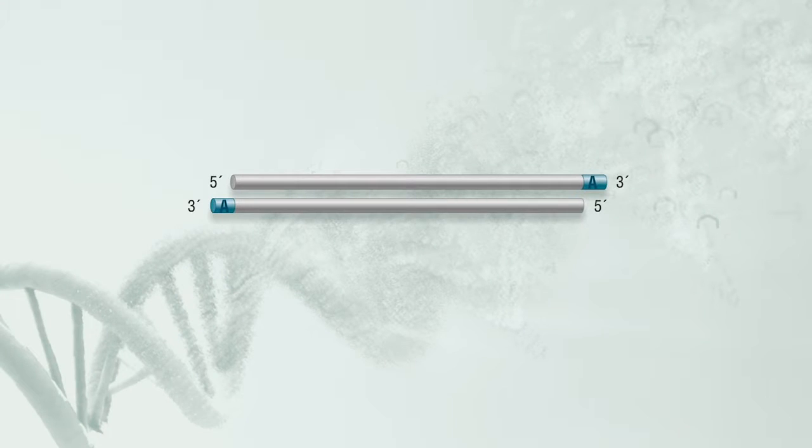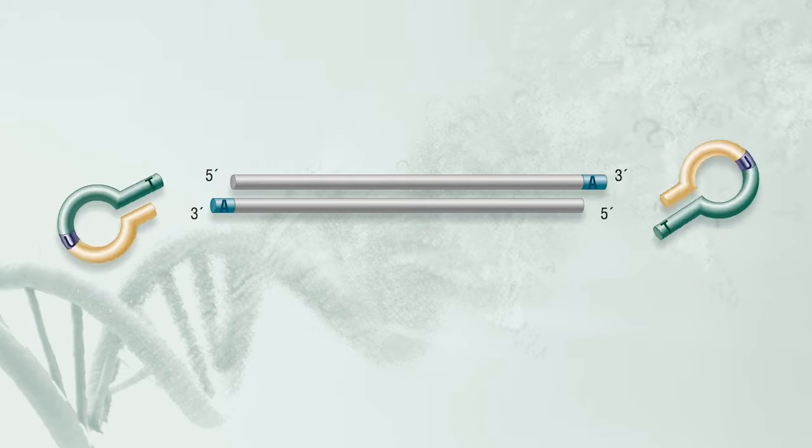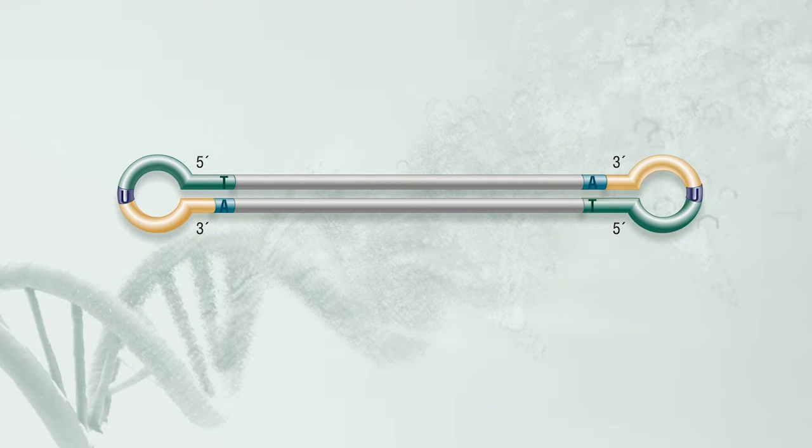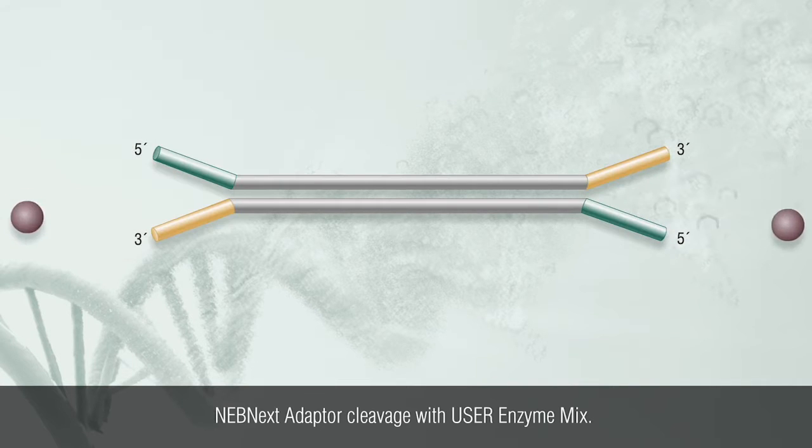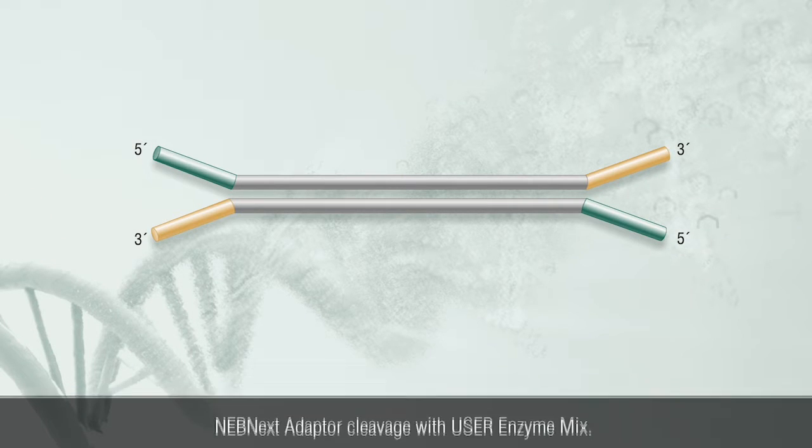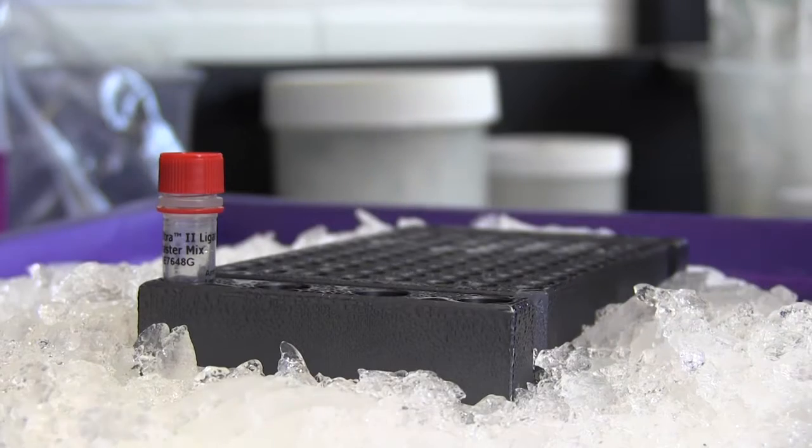In this step, adapters with a single T overhang are ligated to the N-Repair dA tailed fragments. If you started with less than 100 nanograms of input DNA, we recommend using lower amounts of adapter to reduce the risk of adapter dimer formation.